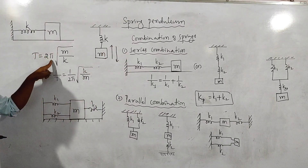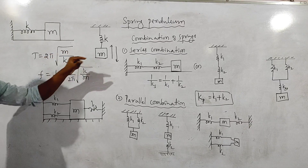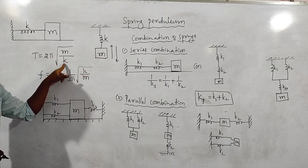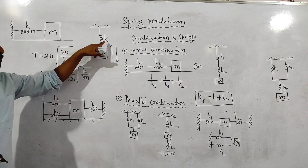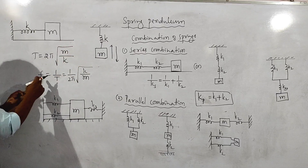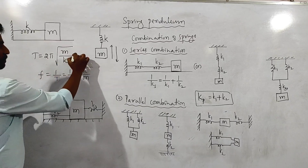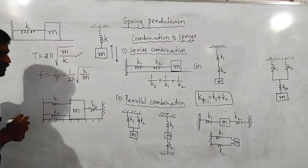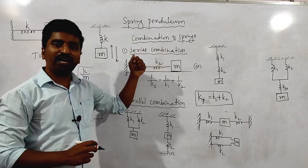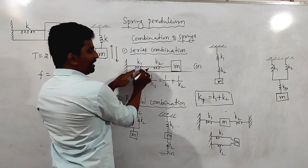The next concept from the chapter oscillation is the spring pendulum. The time period is given by T = 2π√(m/k). The time period depends upon the mass attached and the spring constant k, considering a massless spring.